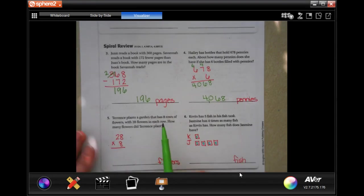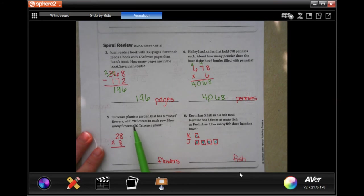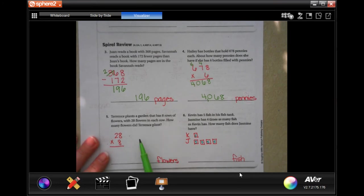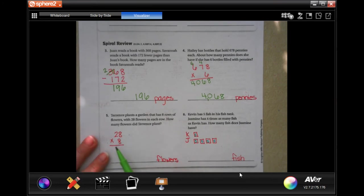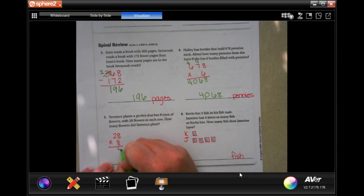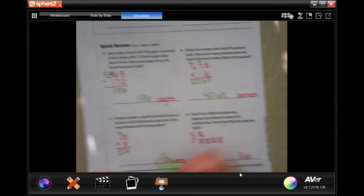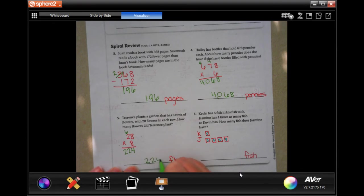Terrence plants a garden that have eight rows of flowers with 28 flowers in each row. How many flowers did Terrence plant? Well, 28 flowers in each row and eight of those rows. Let's use some math. Eight times eight is 64, carry your six. Eight times two is 16, plus six more, 22. 224 flowers.